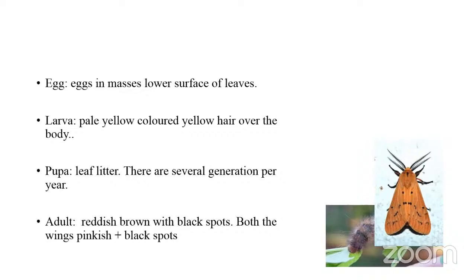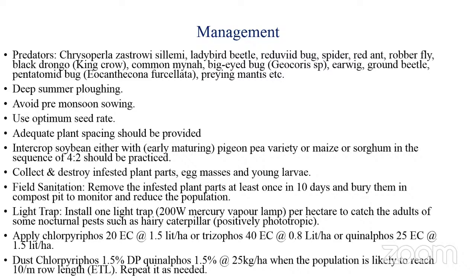For management, conserve predators, go for deep summer plowing, avoid pre-monsoon sowing as it creates a conducive environment for the pest, use optimum seed rate and adequate plant spacing. Intercrop with cowpea, P-variety, or maize. This pest also attacks soybean, so intercropping with PG and P or maize or sorghum at a 4:2 ratio is recommended. Collect and destroy infected parts, egg masses, and early larvae.